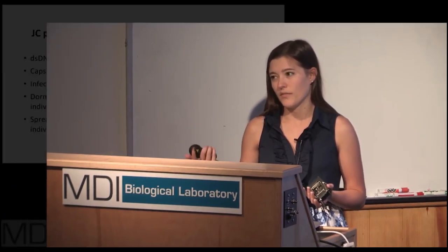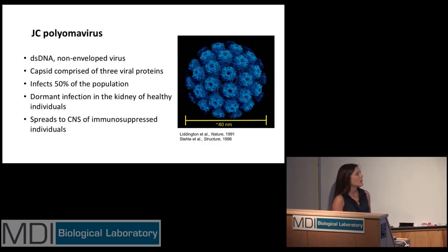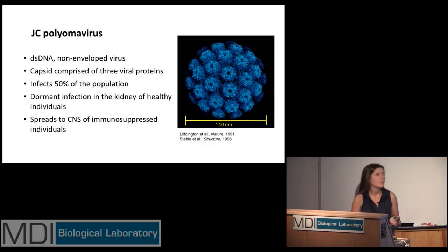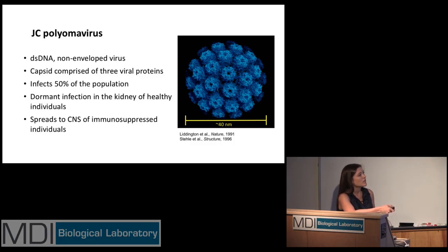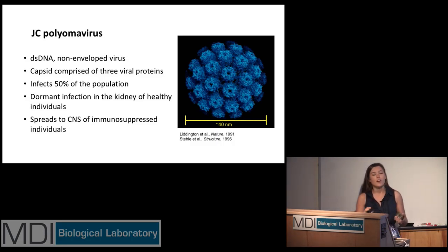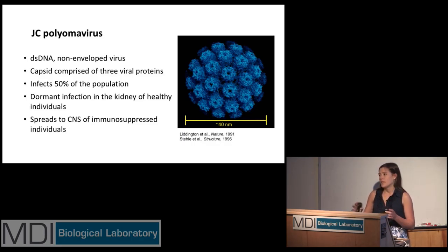A little bit of background on the JC polyomavirus, because a lot of people aren't aware that the virus even exists. It is a double-stranded DNA virus, non-enveloped, and has a capsid comprised of three viral proteins: VP1, VP2, and VP3. VP1 is the only viral protein expressed on the exterior of the capsid and is directly recognized during viral binding to the host cell. They are pentamers and are copied 72 times on the exterior of the virus.